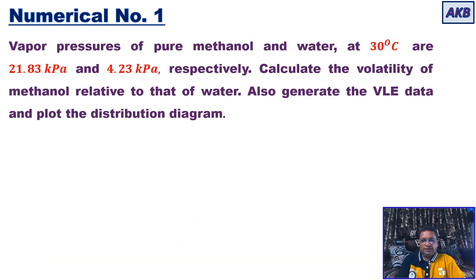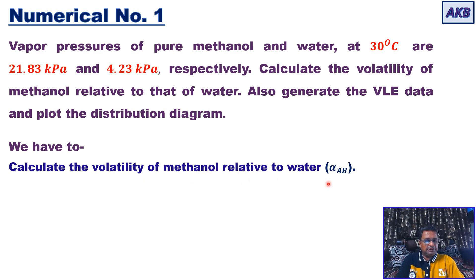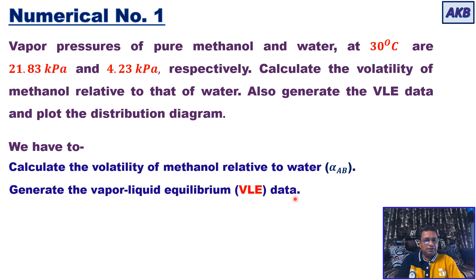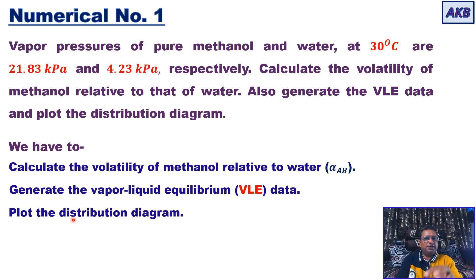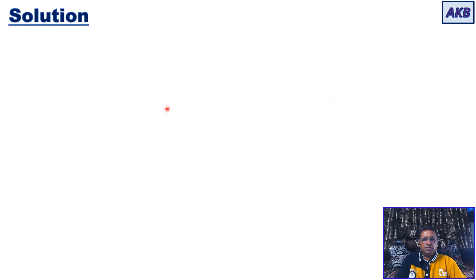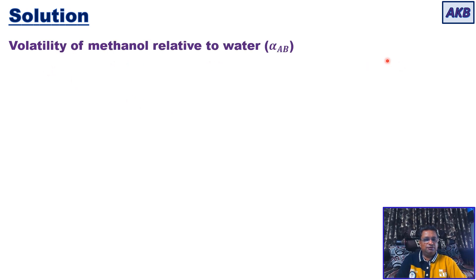What we have to do: first, calculate the volatility of methanol relative to water, that is, calculate alpha_ab. Second, generate vapor-liquid equilibrium (VLE) data — various x-y values. Third, plot those x versus y values to get the distribution diagram, which tells us how the more volatile component is distributed between the vapor and liquid phases.